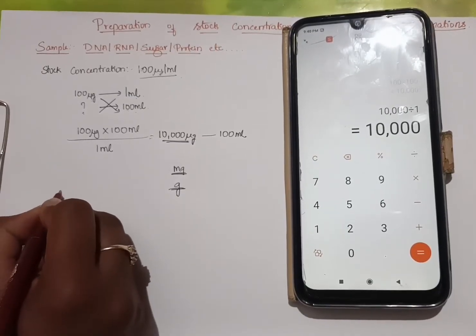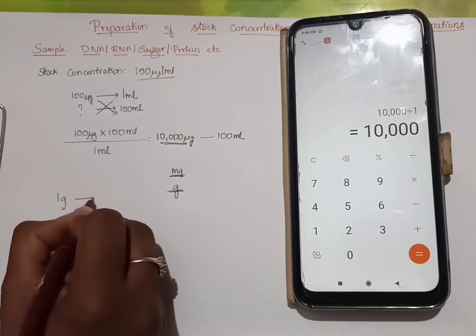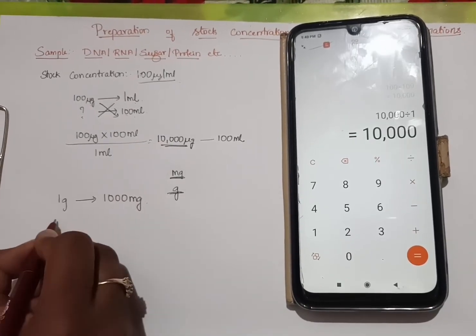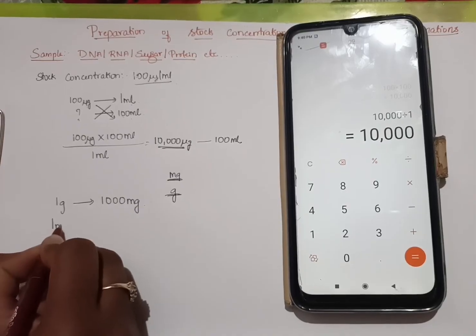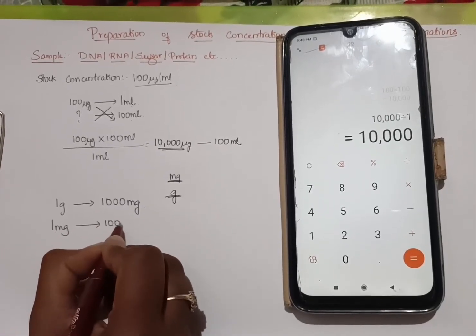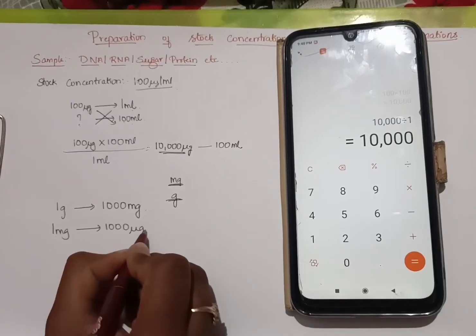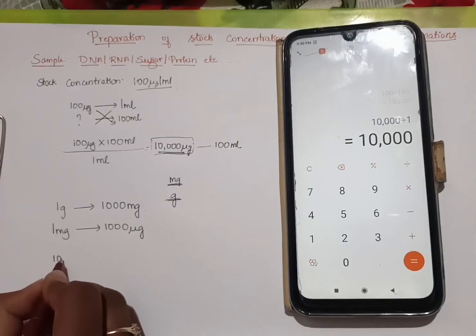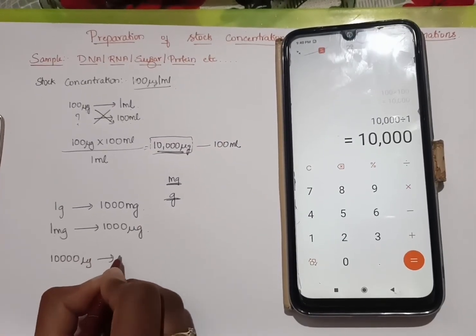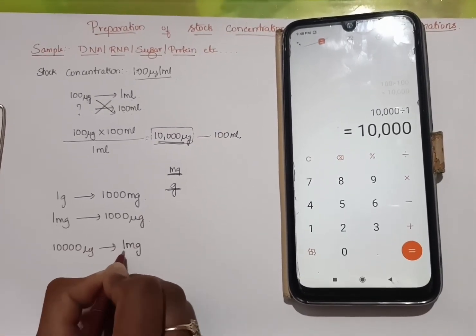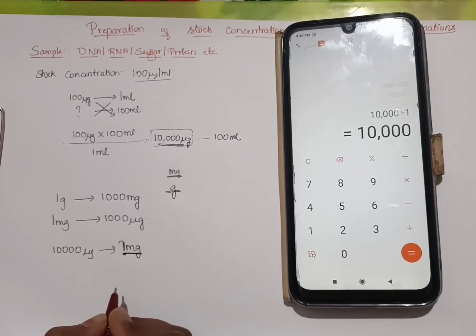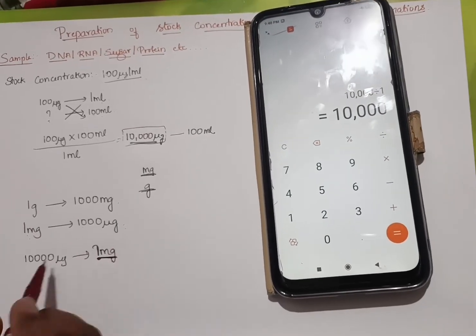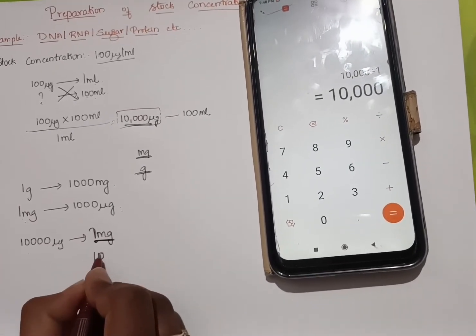Here you can see 1 gram equals 1000 mg. Likewise, 1 mg equals 1000 micrograms. We have got 10,000 micrograms as answer. So 10,000 micrograms equals how much mg we have to find out. If 1 mg is 1000 µg, then 10,000 µg will be 10 mg.